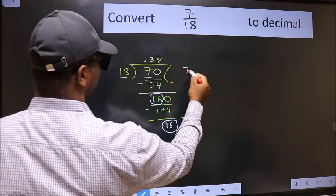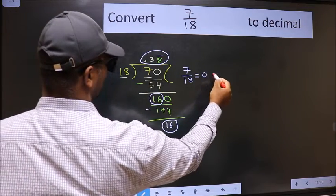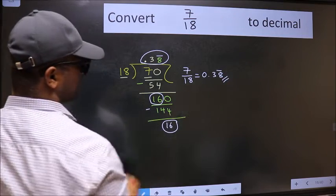Therefore, decimal of 7 by 18 is this one: 0.38 with a bar on this number. This is our answer.